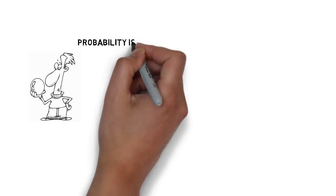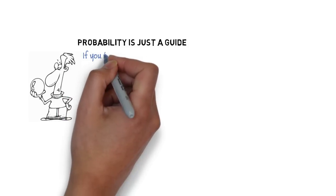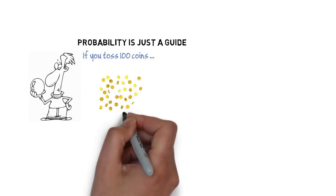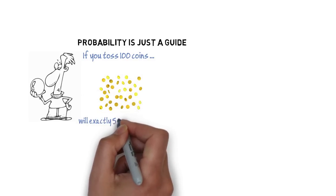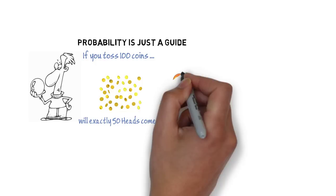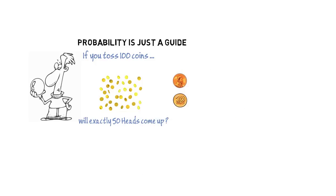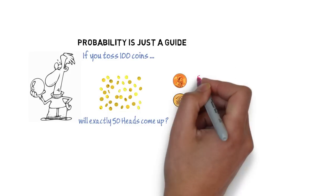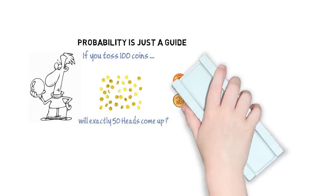The probability does not tell us exactly what will happen. It is just a guide. If you toss a hundred coins, will exactly 50 heads come up? Probability says that heads have a 50% chance. So, should we expect 50 heads? When you actually try it out, it will be a number near 50.